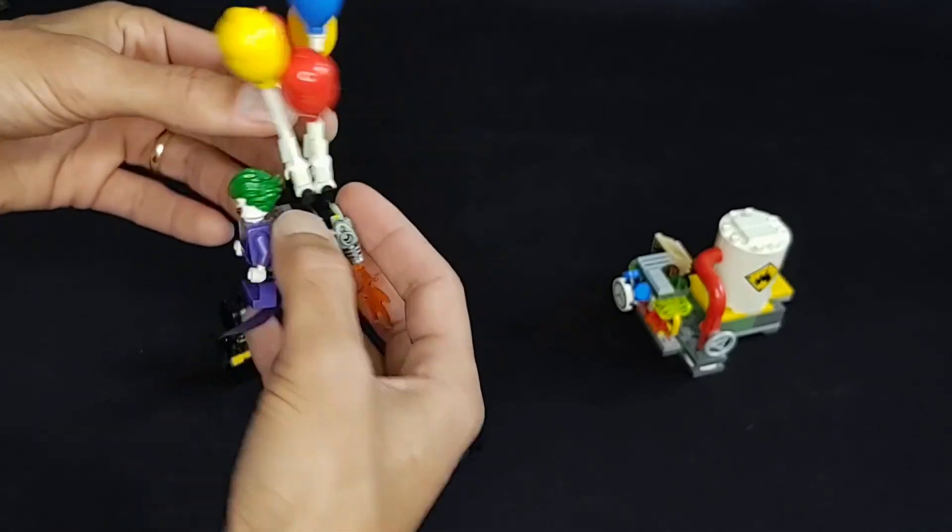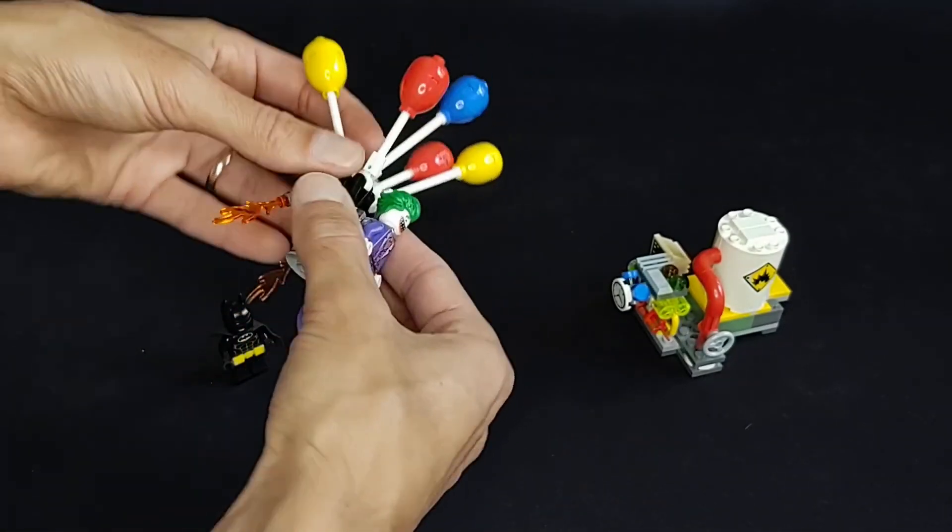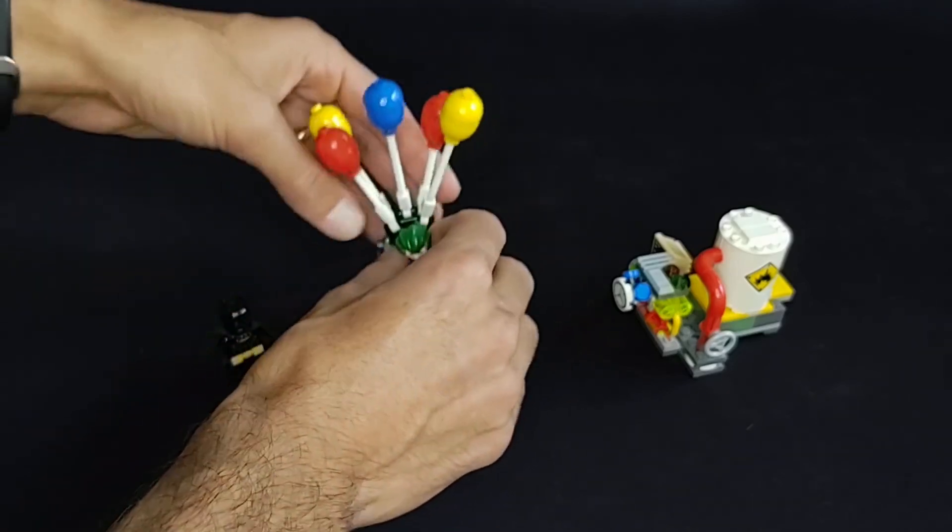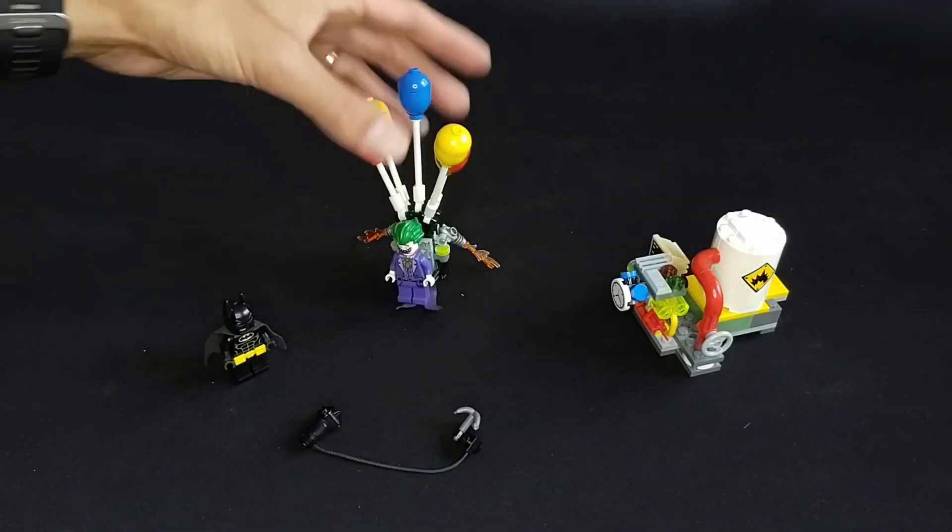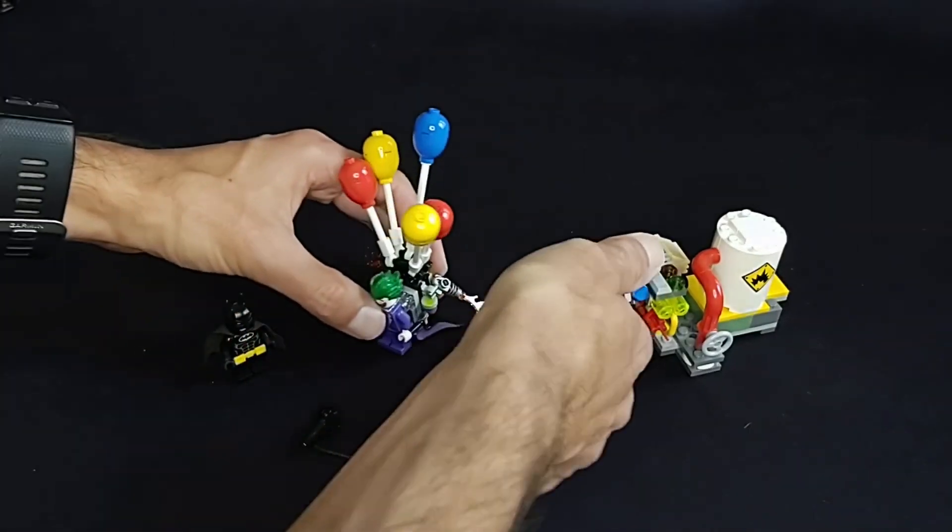But yeah, you get this little kind of jetpack sort of balloon thing. It's a fun little build, and it's able to stand up on its own like that. Of course, Joker's stepping on his coattails now. There you go.